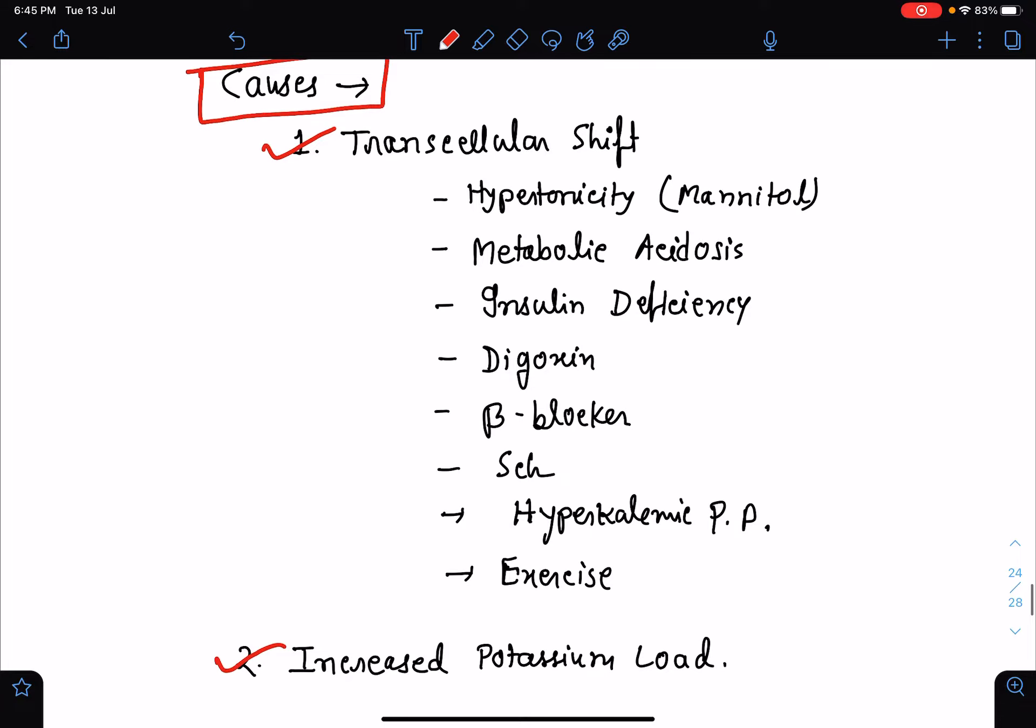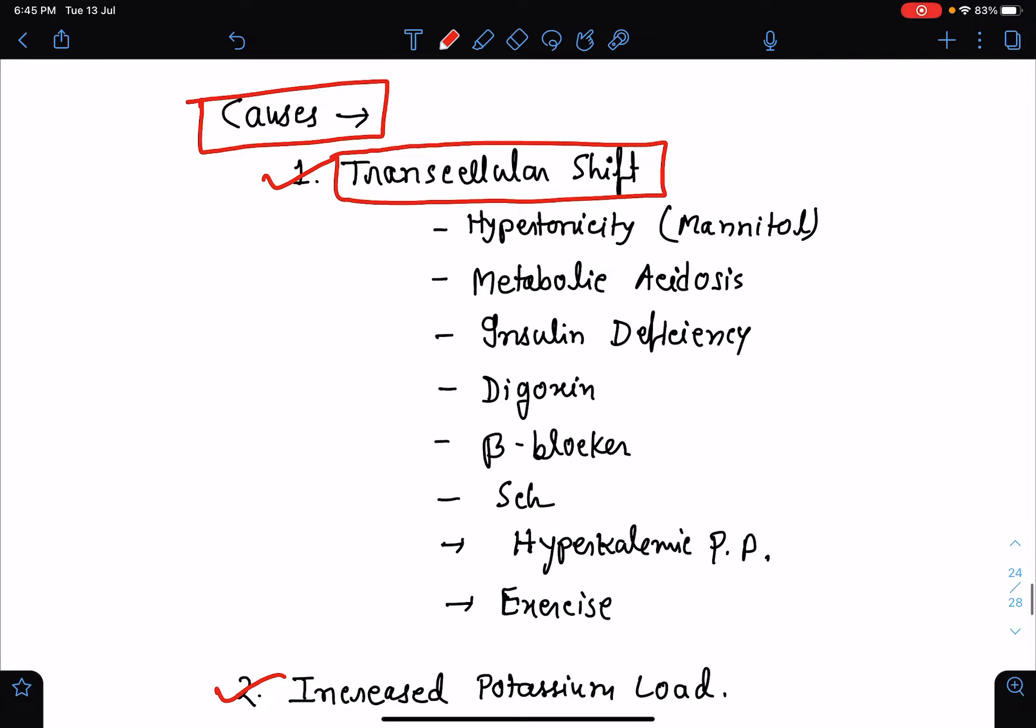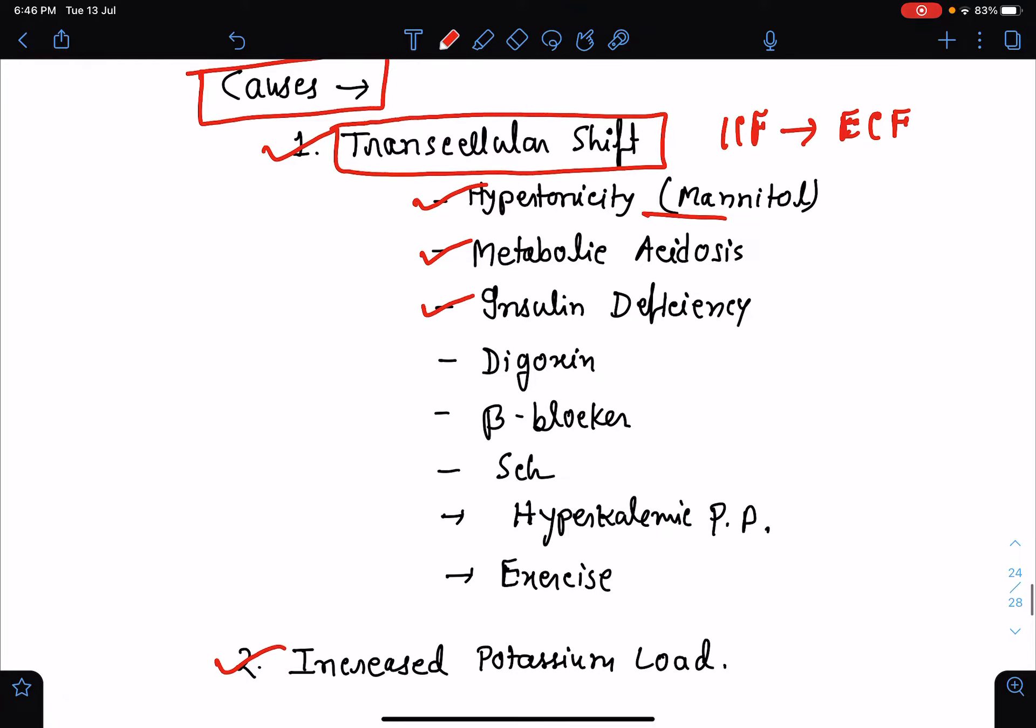Now about the transcellular shift. Transcellular shift means shift of potassium from the intracellular fluid to extracellular fluid. The shift may be due to increased serum osmolality from use of mannitol, metabolic acidosis, insulin deficiency, use of certain drugs like digoxin, beta blockers, succinylcholine, hyperkalemic periodic paralysis, and vigorous exercise.